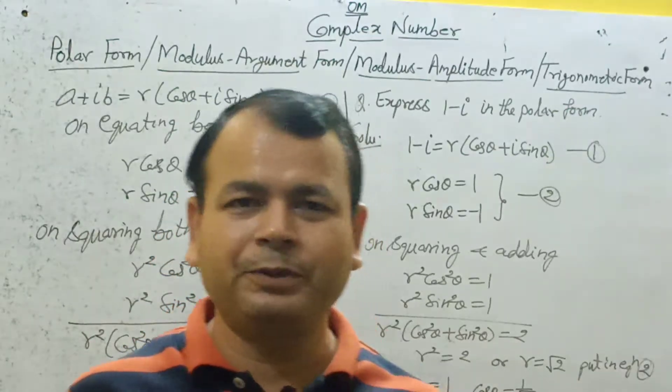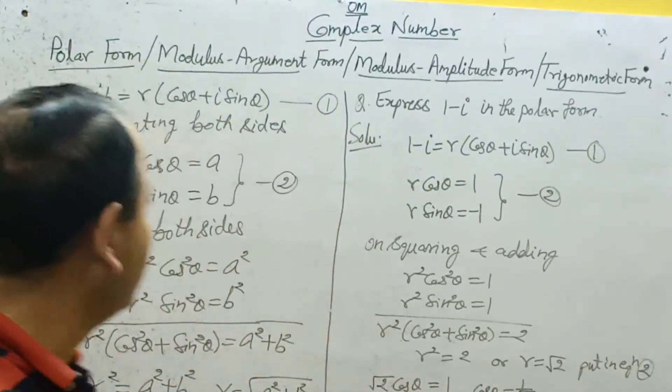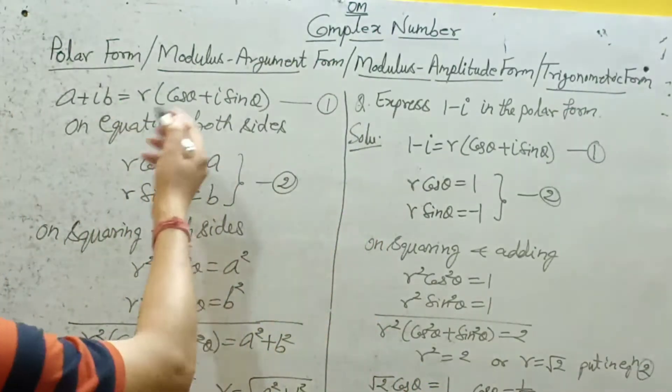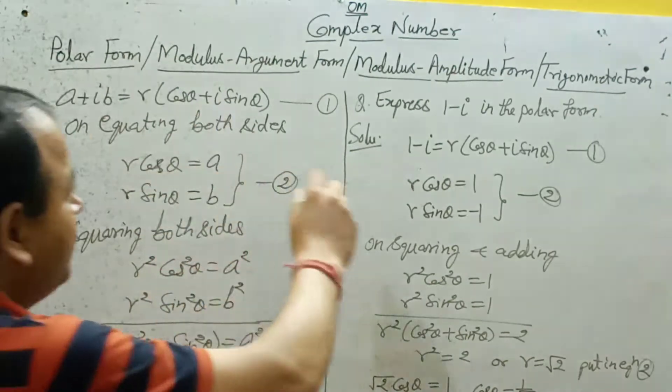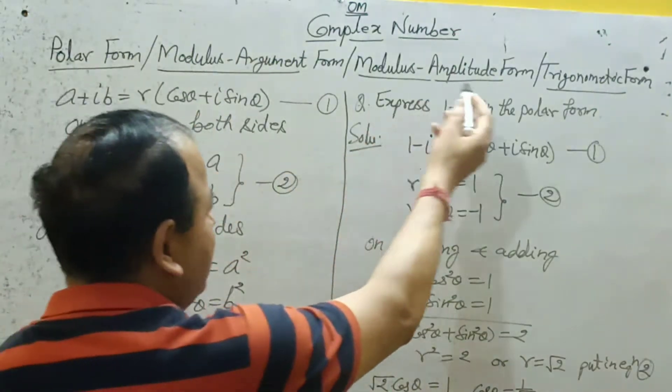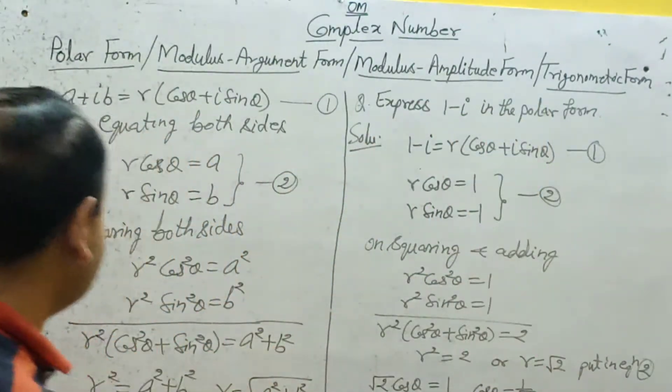Hello students. In this video we will discuss about polar form. Polar form is also known as modulus argument form, modulus amplitude form, and trigonometric form.